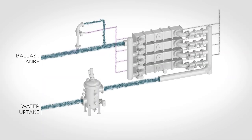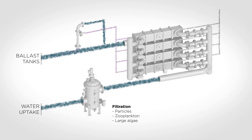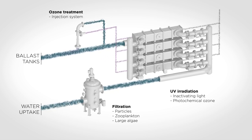The ballast water system consists of the following parts: a filter for removing particles, zooplankton and large algae; UV lamps for generating photolytic inactivating light and photochemical ozone generating light; an ozone injector system for injection of generated ozone into the ballast water flow.